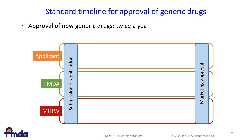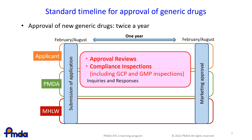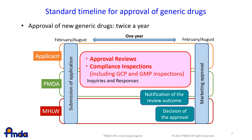This shows the standard timeline for approval of generic drugs. The standard review period of generic drugs is one year. The approval of new generic drugs is given twice a year, in February and August. For example, a generic drug application submitted in February is usually approved in the following February. The PMDA conducts approval reviews and compliance inspections by asking questions or requiring more information from the applicant if needed. The PMDA notifies the Ministry of Health, Labour and Welfare of the outcome of approval reviews and compliance inspections. MHLW makes the decision for approval.